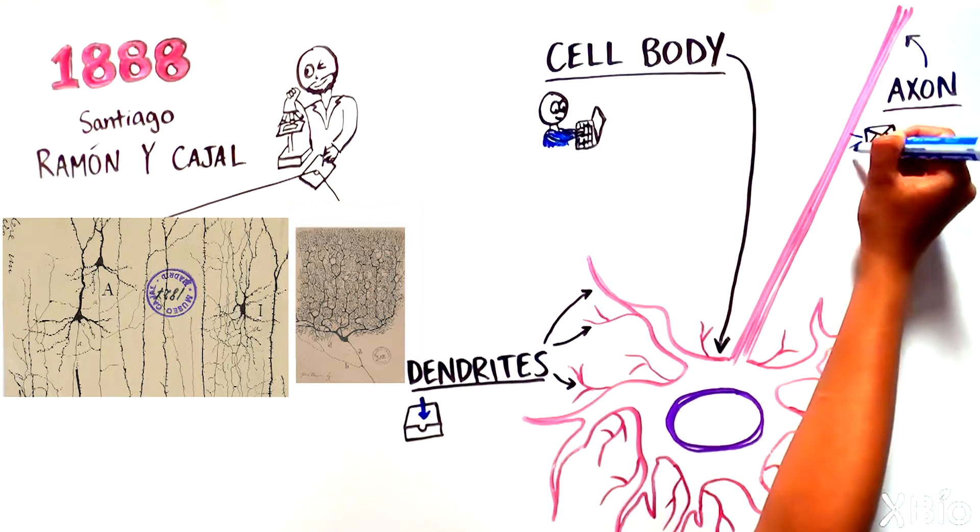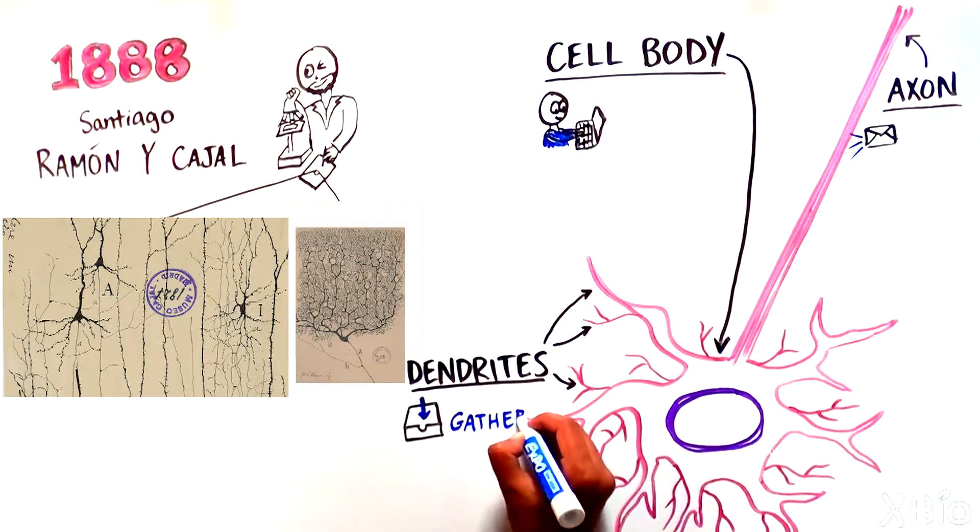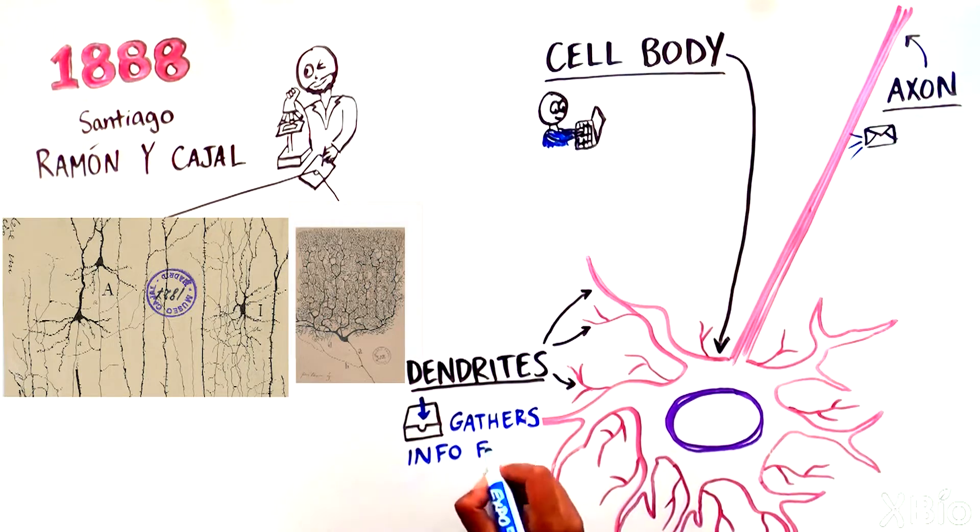The dendrites are branch-like projections extending from the cell body, through which the neuron gathers information from its environment, including other cells.